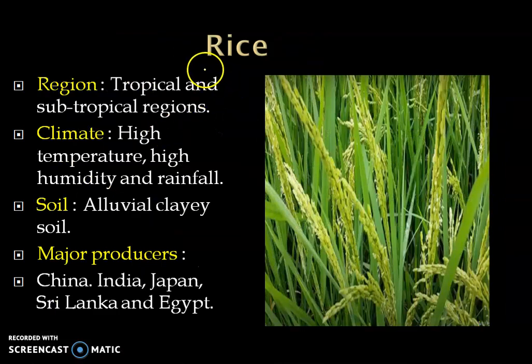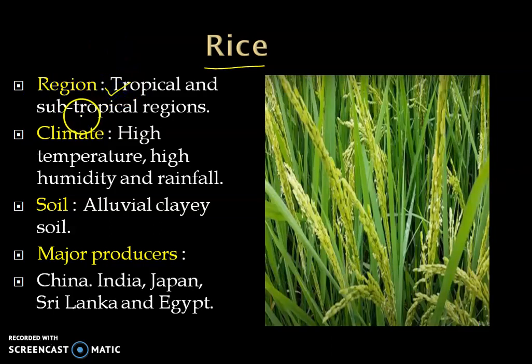First of all, rice. It is the major crop of the world. Roughly, one half of the world population, including all of East and Southeast Asia, is wholly dependent upon rice as staple food. More than 90% of the world's rice is grown in Asia. It is said that there are about more than 40,000 varieties of rice in the world. Rice is mainly grown in tropical and subtropical regions.